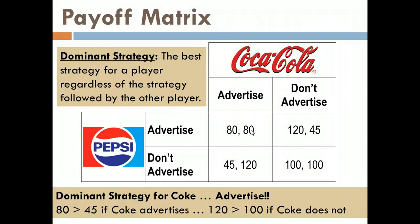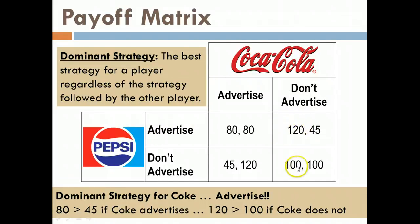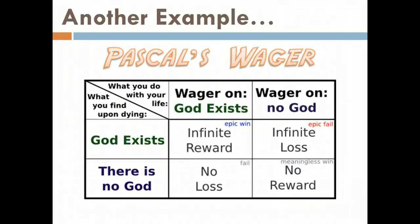We can look at this from Pepsi's perspective as well. If Coke chooses to advertise, Pepsi's best option is also to advertise because 80 is greater than 45. And if Coke chooses not to advertise, Pepsi's best option is still to advertise because 120 is greater than 100. So both companies have a dominant strategy, which is to advertise. Both will pursue that dominant strategy, and when they do, they enter into what is known as a Nash equilibrium.